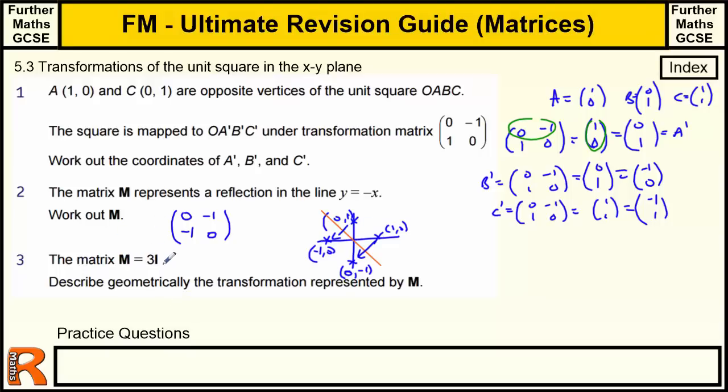The matrix M is equal to 3I. Describe geometrically the transformation represented by M. So 3I is going to be 3, 0, 0, 3, because I is 1, 0, 0, 1. So 3 lots of that is going to be that, and that's just an enlargement, scale factor 3, center 0, 0.